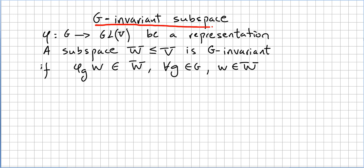Let φ be a representation that takes G to the general linear group. A subspace W of V is G-invariant if φ(g)w is in the subspace W of the vector space V, for all g in the group and w an element in the subspace. So if the image of an element in the subspace is still in the subspace — this is a basic concept in linear algebra.